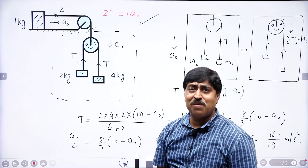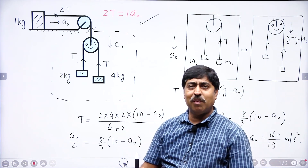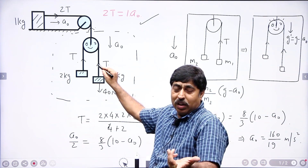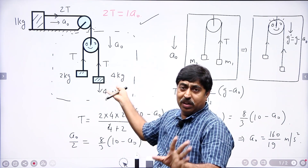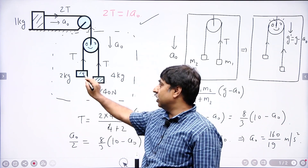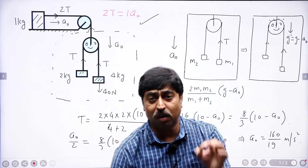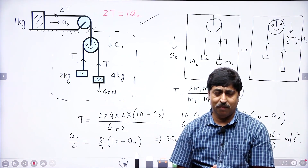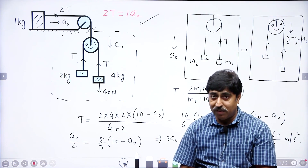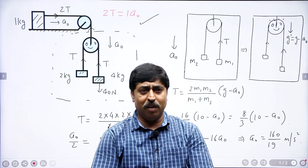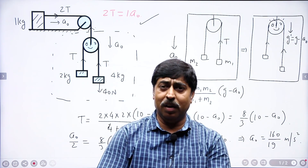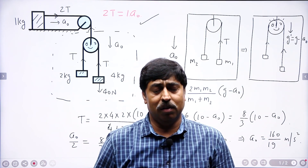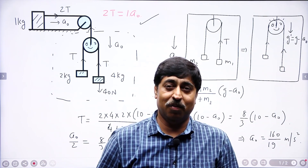Now go in the reference frame of ground. This block is having a force of weight — that is 40 Newton — and one another force is tension. So 40 minus T is mass times acceleration; you get the acceleration of this block, and similarly you can write the acceleration of the other block. This is the shortest, quickest method of solving this problem. I hope you have understood what I am trying to explain. Keep sharing the videos — please help me increase my subscriber base; that will keep me motivated to keep feeding you with such amazing tips and tricks for JEE Physics. Goodbye.